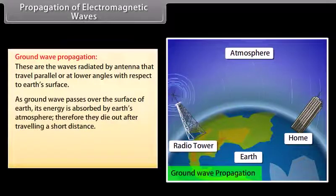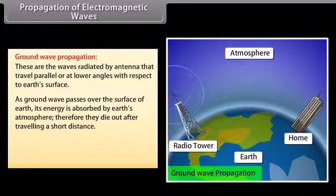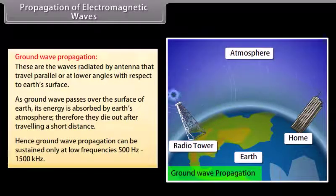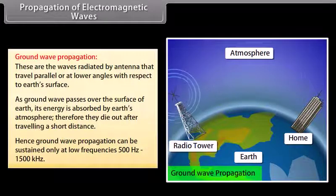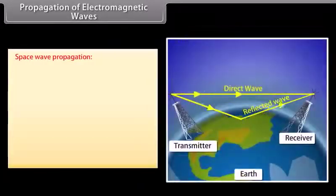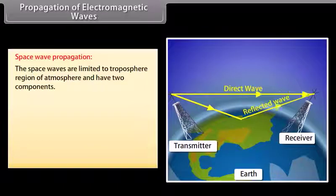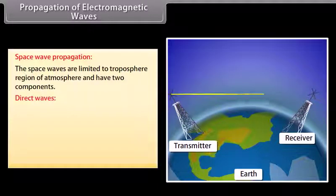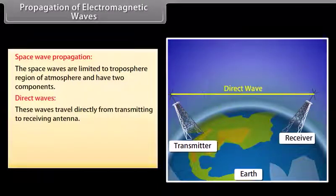Ground wave propagation: these are waves radiated by antennae that travel parallel or at lower angles with respect to Earth's surface. As a ground wave passes over the surface of Earth, its energy is absorbed by Earth's atmosphere; therefore, they die out after traveling a short distance. Hence, ground wave propagation can be sustained only at low frequencies, from 500 Hz to 1500 kHz.